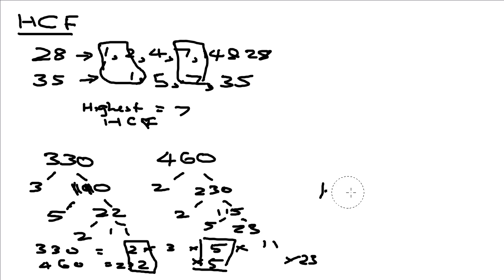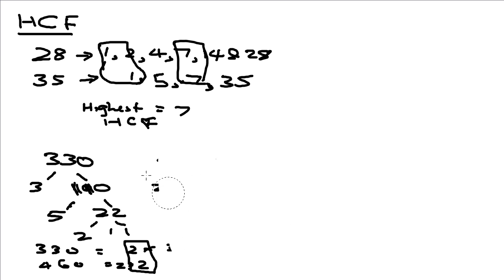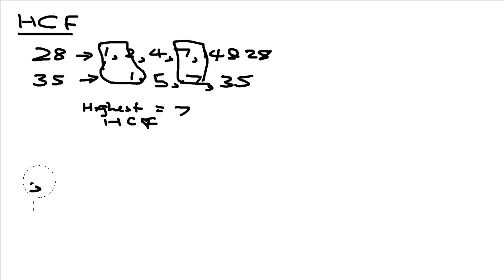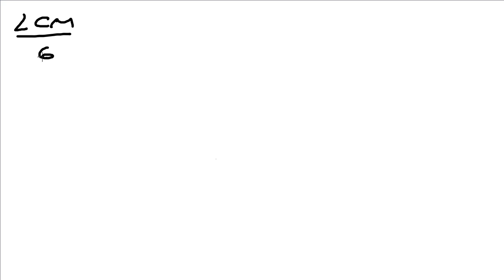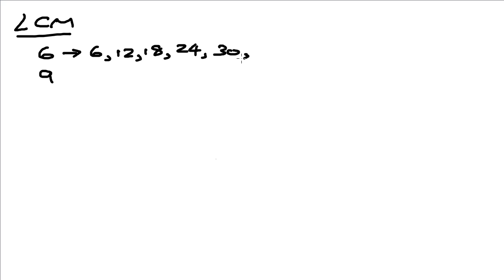So now let's look at LCM — the lowest common multiple. When we look at the LCM of two numbers, we are trying to see which multiples of these two numbers are the same. So for example, let's take 6 and 9 and list down the multiples of 6: 6, 12, 18, and so on.